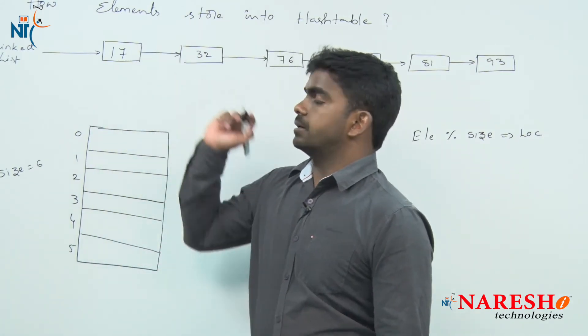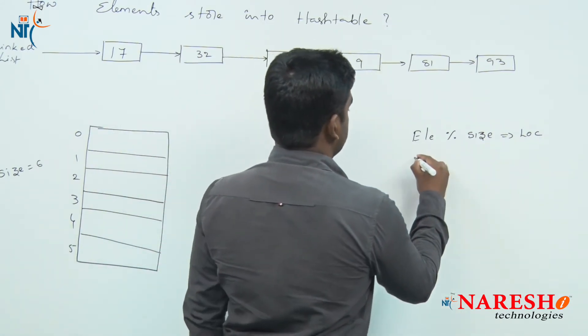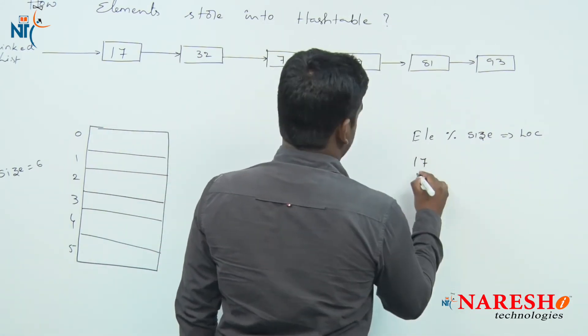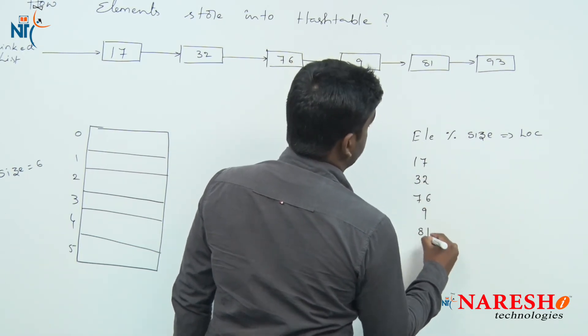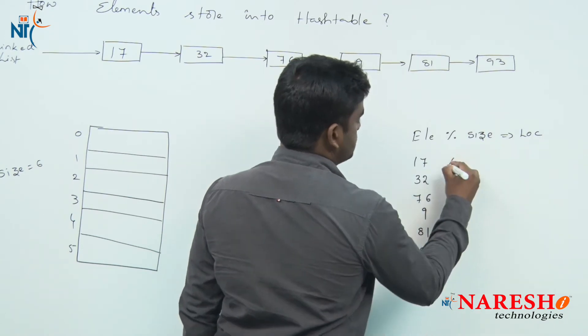Suppose the same elements we are storing. Here it is 17 is one element, 32, 76, 9, 81, 93, these are the elements.